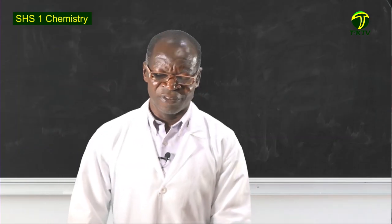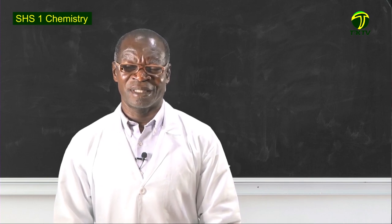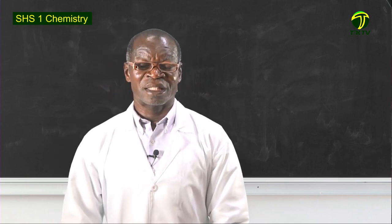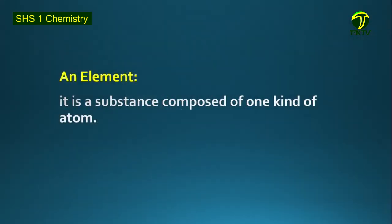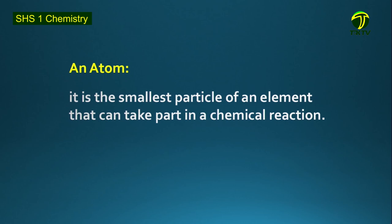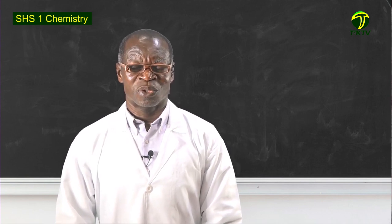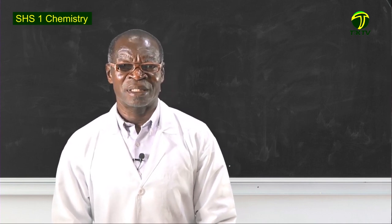Now we have some basic definitions. What is an element? An element is a substance composed of one kind of atom. Then, what is an atom? An atom is the smallest particle of an element that can take part in a chemical reaction. When we write chemical reactions, we are using symbols, but what is actually taking part in the chemical reaction of the element is the atom. You have to know the difference between an element and an atom.